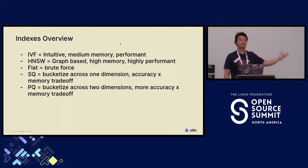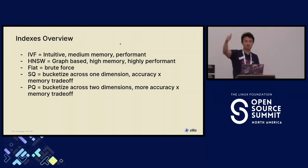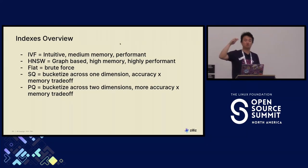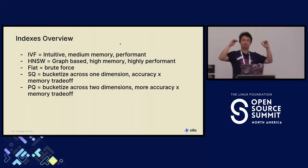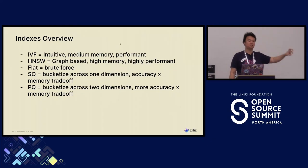To summarize the indexes: IVF is an intuitive clustering method with good results and low memory usage. HNSW is a graph-based method that takes a lot of memory but is very performant and highly accurate. Flat is brute force — searches every vector, no memory change, slow but 100% accurate retrieval. Scalar and product quantization are ways to bucket your data for less memory at the cost of some accuracy.